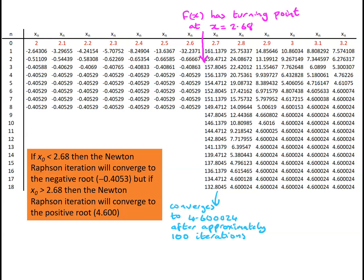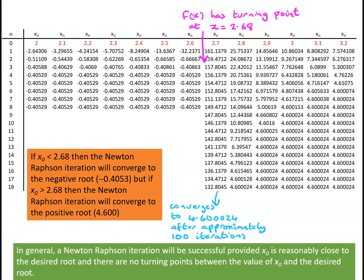The turning point at x ≈ 2.68 explains the behaviour: if x0 is less than 2.68, the iteration converges to the negative root; if x0 is greater than 2.68, it converges to the positive root. In general, a Newton-Raphson iteration will be successful provided x0 is reasonably close to the desired root and there are no turning points between x0 and the desired root.